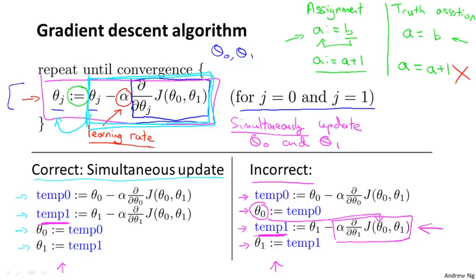And so the right-hand side is not a correct implementation of gradient descent. The way gradient descent is usually implemented, it actually turns out to be more natural to implement the simultaneous update. When people talk about gradient descent, they always mean simultaneous update. If you implement the non-simultaneous update, it will probably work anyway, but that algorithm is not what people refer to as gradient descent — it's some other algorithm with different properties that can behave in slightly stranger ways. So what you should do is really implement the simultaneous update of gradient descent.